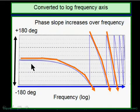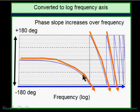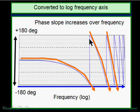Moving now to a logarithmic display over frequency, we can see that instead of the constant slope, we get an ever-changing slope angle which gets steeper and steeper as we rise in frequency. This is the result of the linear mechanism of phase shift being displayed on a logarithmic frequency axis.